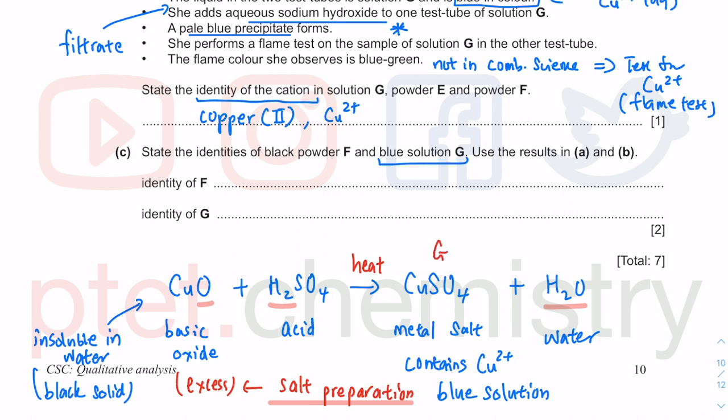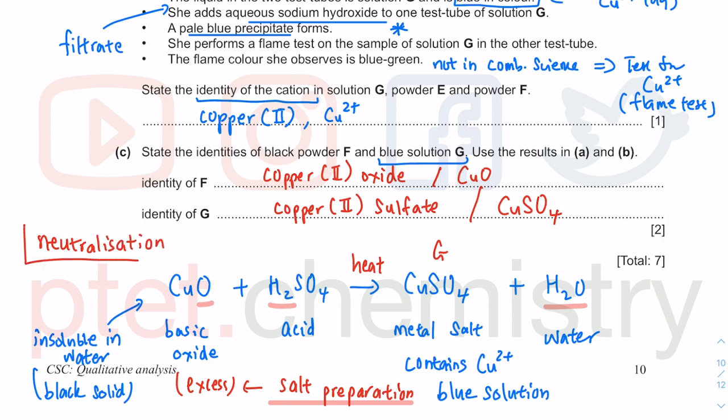The identity of G will be copper(II) sulfate. If you like formulas, you can write Cu2+ SO4 2-, so one of each. The identity of the black powder has to be copper(II) oxide, which is a basic oxide. Cu2+ O2-, so one of each. This reaction is called neutralization, reaction between an acid and a base, giving you salt and water.